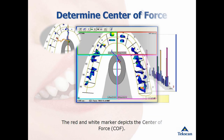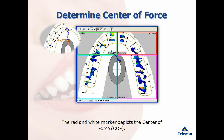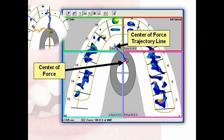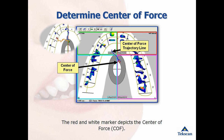Each T-Scan recording has a center of force trajectory line that displays the history of the patient's bite. The trajectory line is color coded to easily identify when the patient is occluding, holding down, or where the excursion begins. The center of force is a timeline of what happens throughout the path of closure. Each segment of the center of force trajectory line represents one click of the mouse, or one hundredth of a second in time.